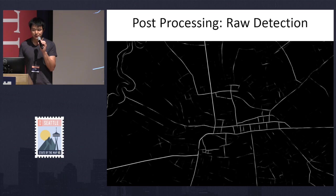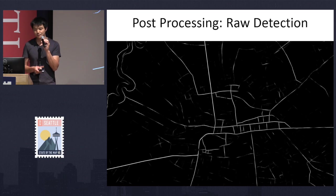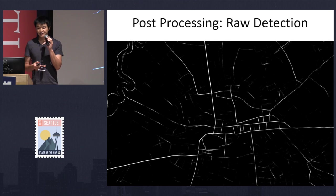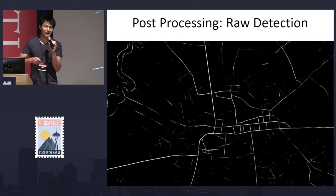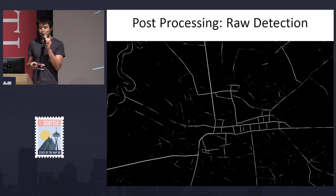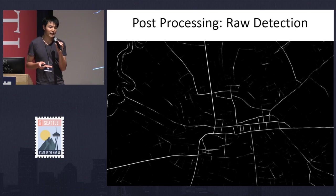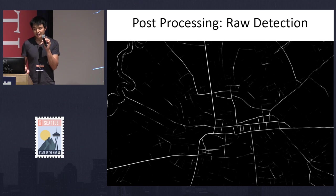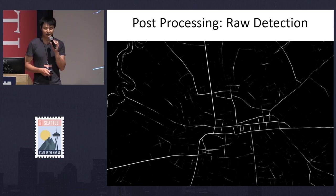Having all this road detection, it remains a big problem because the roads from those predictions are just a raw raster of the image as grayscale, where the brightness indicates the confidence of whether a pixel is a road or not. The task remains to convert all this into vector data before we can show it on maps. In the next set of slides, I'll show our post-processing techniques for doing this job.